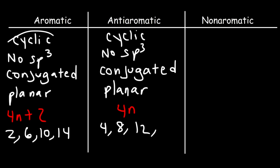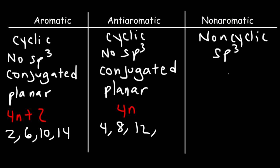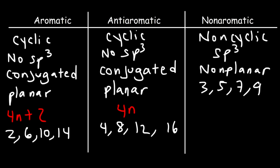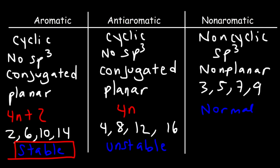If one of these conditions is not met, the molecule is automatically non-aromatic. So if the molecule is linear and not cyclic, it's non-aromatic. If there's an sp3 carbon in the ring, it's not aromatic. If it's not conjugated or not planar — if it has a 3D shape — it's non-aromatic. Or if it has an odd number of pi electrons, such as 3, 5, 7, or 9, it's non-aromatic. Aromatic compounds are very stable, anti-aromatic compounds are unstable, and non-aromatic compounds are just normal. Aromatic compounds are more stable than non-aromatic, and non-aromatic are more stable than anti-aromatic.